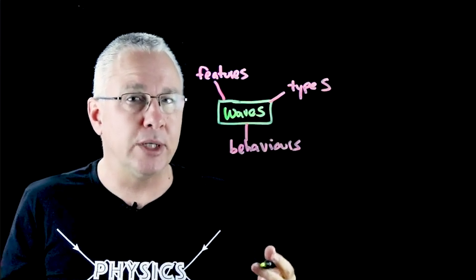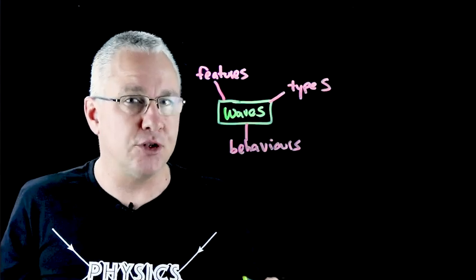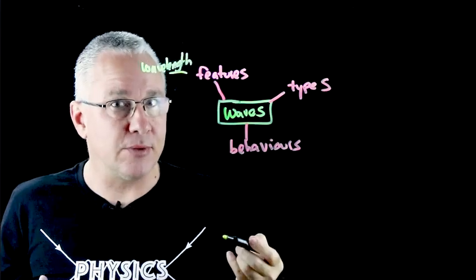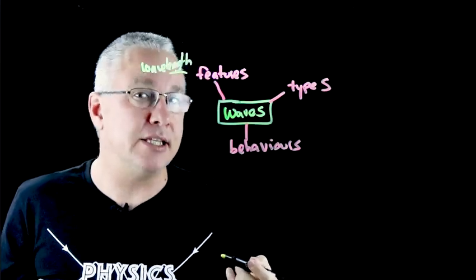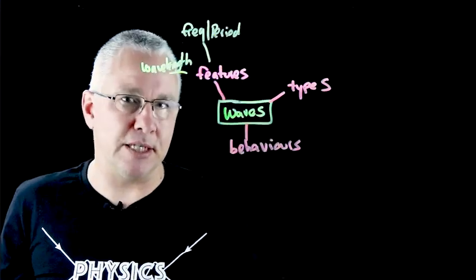Now the first aspect we're going to be looking at in terms of waves is how we measure the actual wave, and there are a number of terms that you should become familiar with. The first is the wavelength, then there's something that's related to its time, which could either be its frequency or its period, and then there's also the aspect of the amplitude.